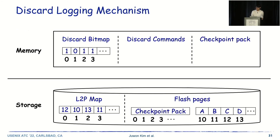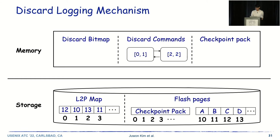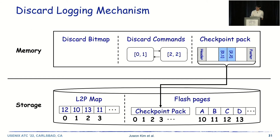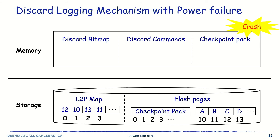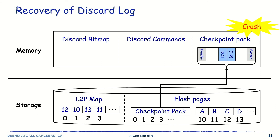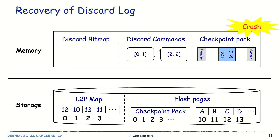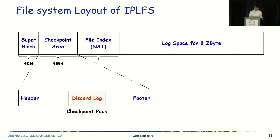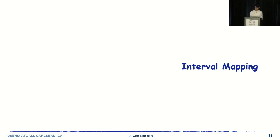The idea is very simple: just log the discard commands into a checkpoint pack and make them recoverable from a crash. The checkpoint pack is saved on disk, so we don't lose it by a crash. Referring to the discard bitmap, discard commands are created in memory. Then we conduct discard logging in the checkpoint pack, which is written to disk. After a crash, discard commands in memory are lost. To recover, we read the checkpoint pack from storage, read the discard logs, and recover the discard commands. After recovery, IPLFS starts dispatching discard commands, and FTL mappings and flash pages are invalidated. The discard log enables completion of discard even after a crash. Here is the complete file system layout of IPLFS — we add space for the discard log inside the checkpoint pack.